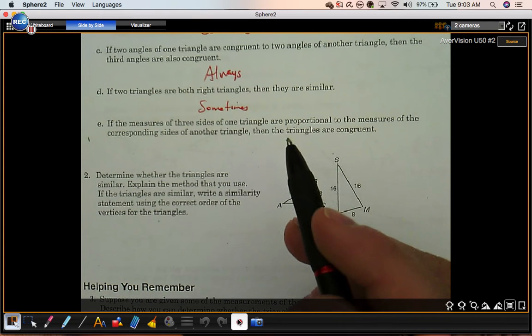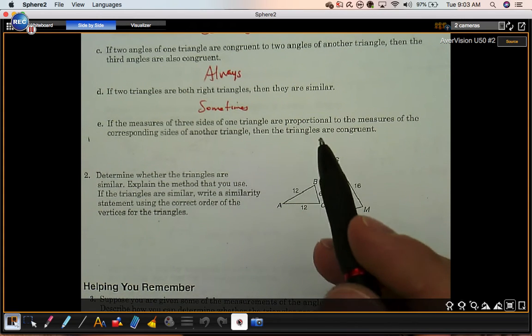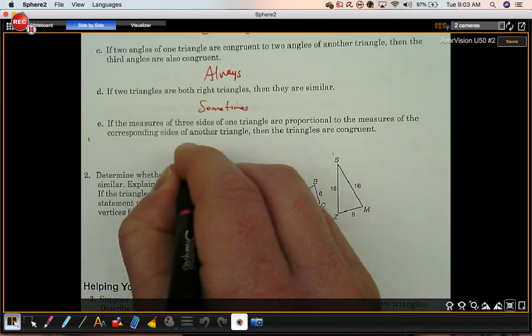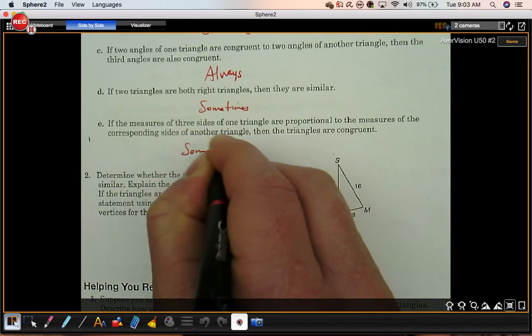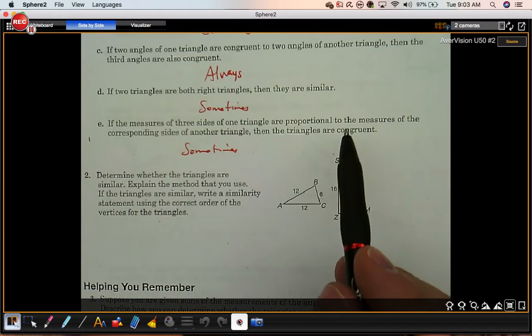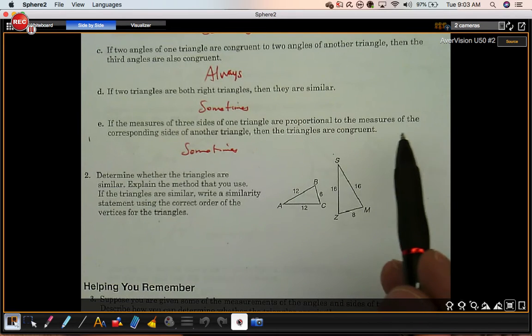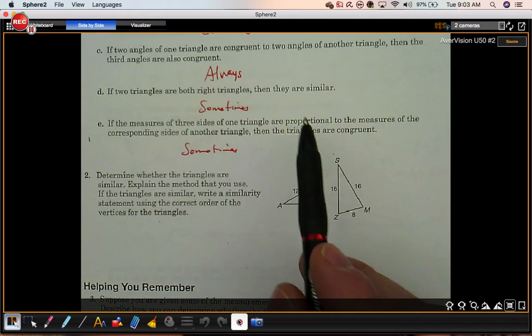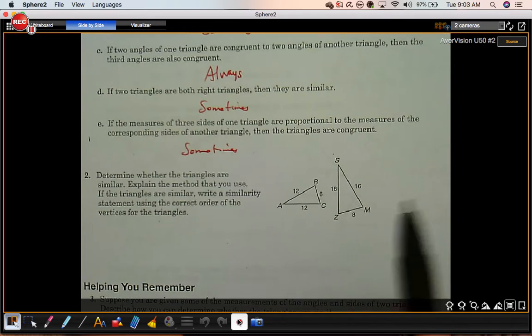They'll be congruent if the scale factor or similarity ratio is one to one. So we're going to put sometimes on here because of that. If you wanted to switch this to a true statement, just cross out congruent and put similar. That would make them similar. That's side-side-side. Three pairs of proportional sides.